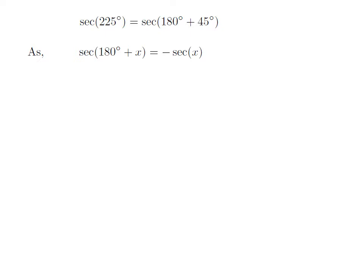As we know, the trigonometry identity secant of 180 degrees plus x equals minus secant of x. The video explaining how to derive this identity is appearing in the upper right corner. Also, the URL address of the video has been mentioned in the description section.